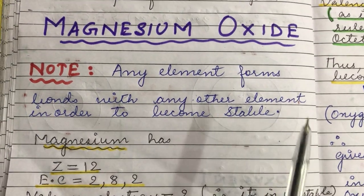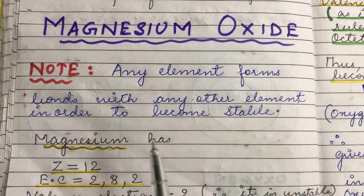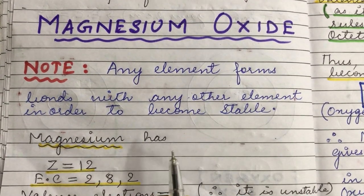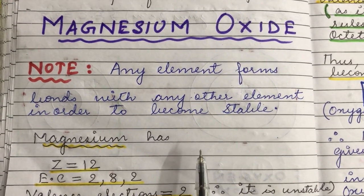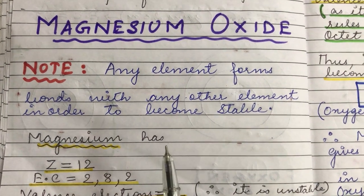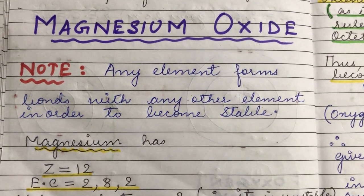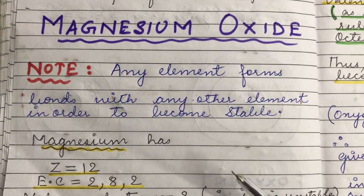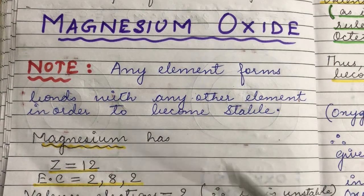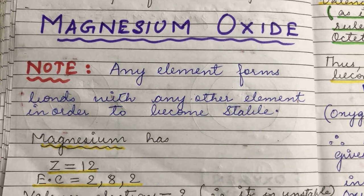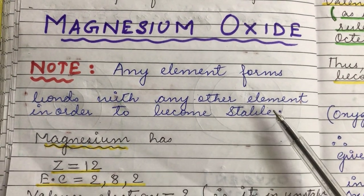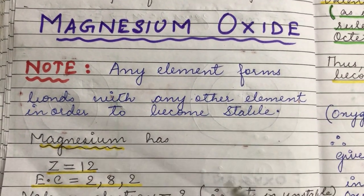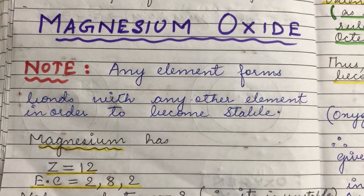Any element forms a bond with another element in order to become stable. That means if any element is losing electrons, it is doing so to become stable. If it is gaining electrons, it is also doing so to become stable, and in turn they form a bond with each other.